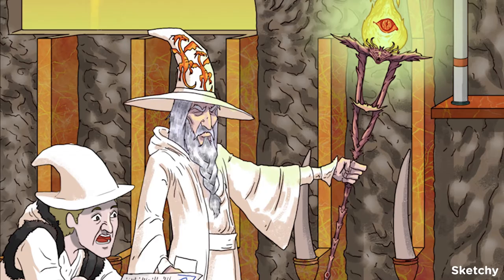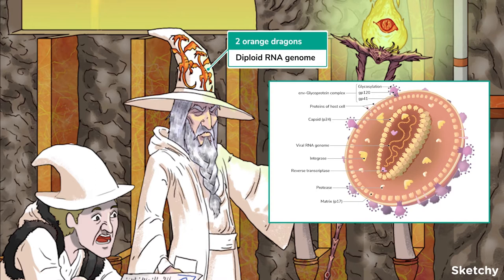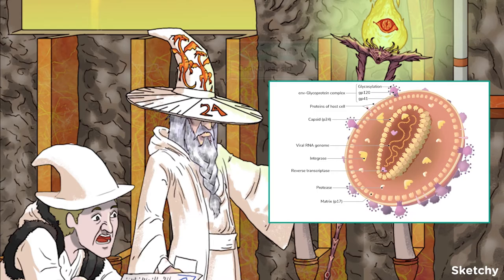Let's move on to the structure of the HIV virion. At the very core is the genetic material. HIV has a diploid genome, meaning each virion contains two copies of its positive-sense single-stranded RNA genome. See the two orange dragons at the very center of the wizard's cap — orange for RNA, of course. The RNA strands and their accompanying reverse transcriptase are surrounded by a conical, cone-shaped capsid, hence the wizard's cone-shaped hat.